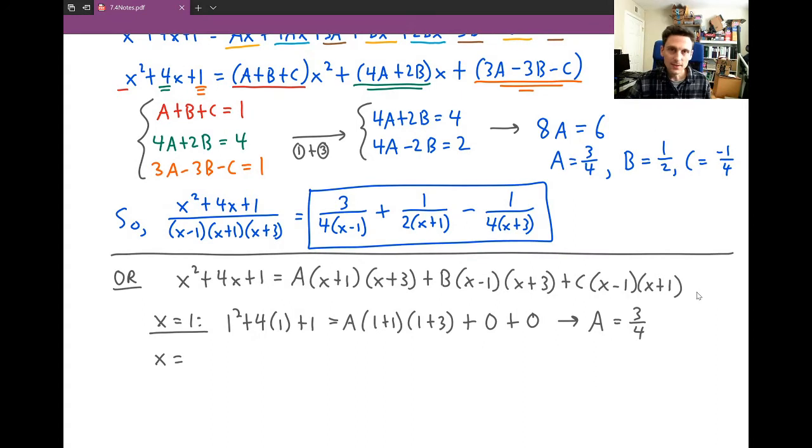Can you see the x value we'd have to plug in to get B by itself? If you said x = -1, that would be correct. x = -1 would eliminate A and C, leaving just B.